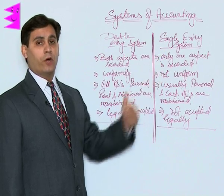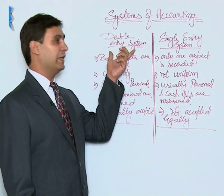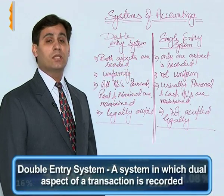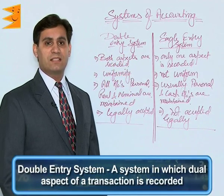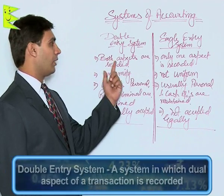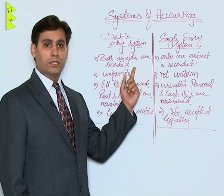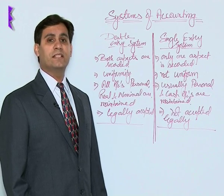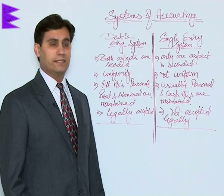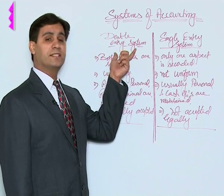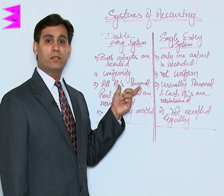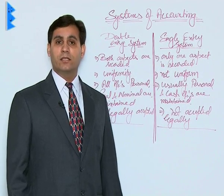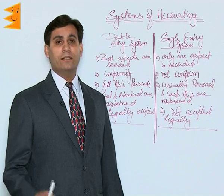The mode of operation is actually clear from the name itself. Double entry system means a system in which the dual aspect of a transaction is recorded — that is, both aspects are recorded. As discussed earlier, whenever a transaction takes place there is an increase and a corresponding decrease, so both aspects are recorded. Whereas in single entry system, only one aspect is recorded.